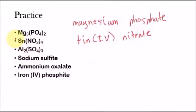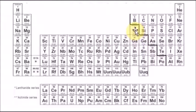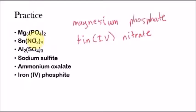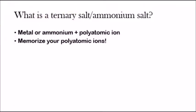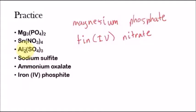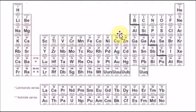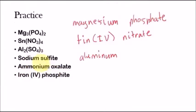Next, we have aluminum — a metal to the left of the zigzag line — and a polyatomic ion, sulfate. Metal plus polyatomic ion is a ternary salt. We write the name of our metal, aluminum. We're not going to use Roman numerals here because aluminum is one of those special elements — like silver, cadmium, zinc, and aluminum — that don't require Roman numerals. Any other metal we do. So it's just aluminum, then the polyatomic ion: sulfate. Aluminum sulfate.